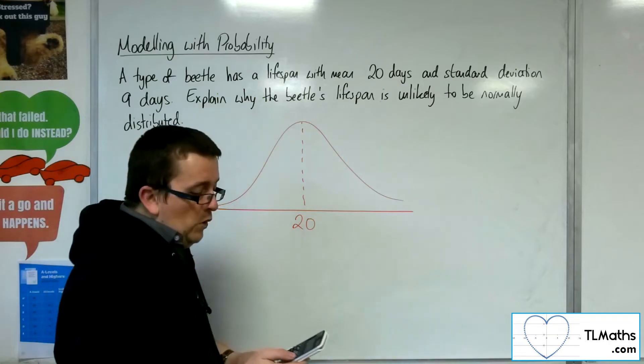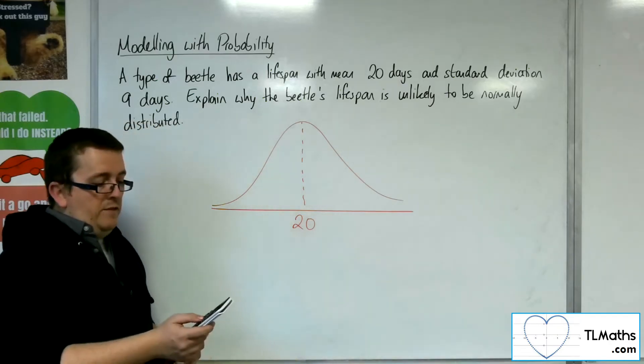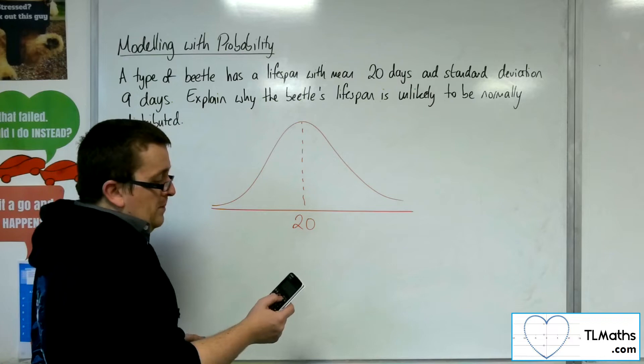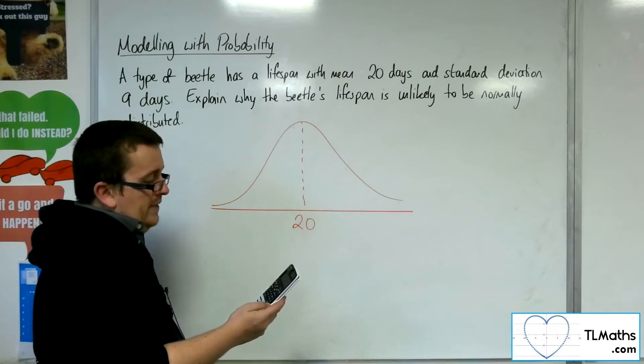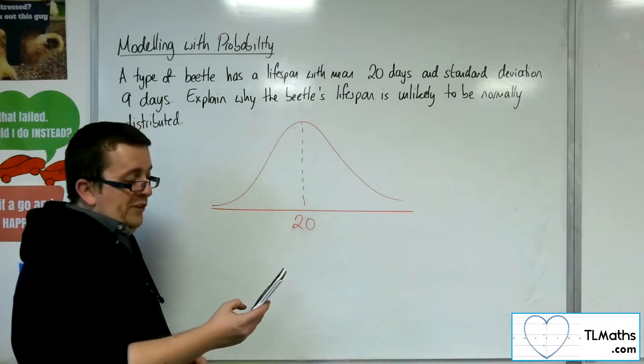When you're on your calculator, this is the ClassWiz, go to menu and then number 7, and then for normal CD.